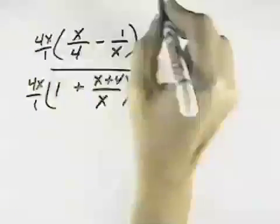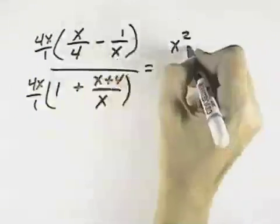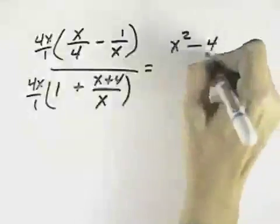When we do that, the 4 cancels out of the first term, leaving x squared, minus the x cancels out of the second term, leaving the 4.